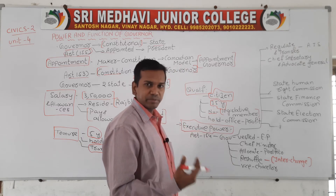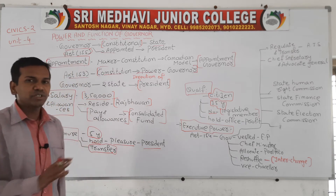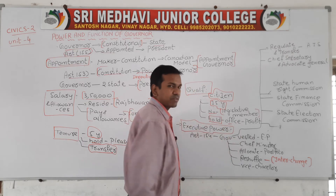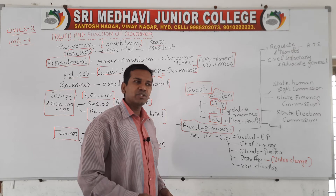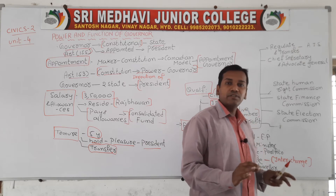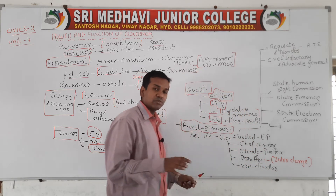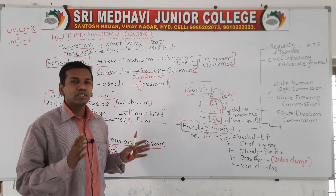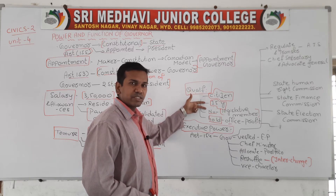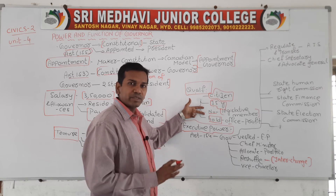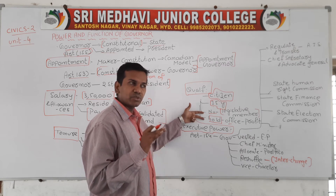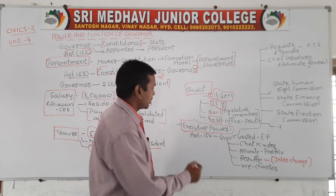The Governor should not be a Member of Parliament from any house. Additionally, no Governor should hold any office for profit. If a person is holding any office for profit, they are not eligible to become the Governor. So the four qualifications are: citizen of India, 35 years of age, not a member of any legislature assembly, and must not hold any office for profit.